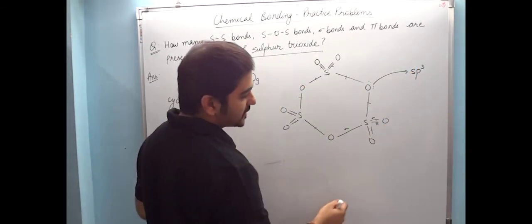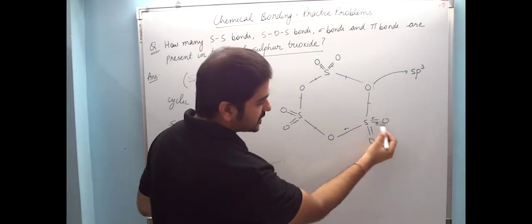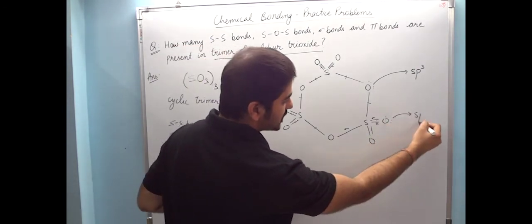But if you talk about this oxygen, which is double bonded oxygen, this double bonded oxygen has 1 sigma and 2 lone pairs. So this is sp2.